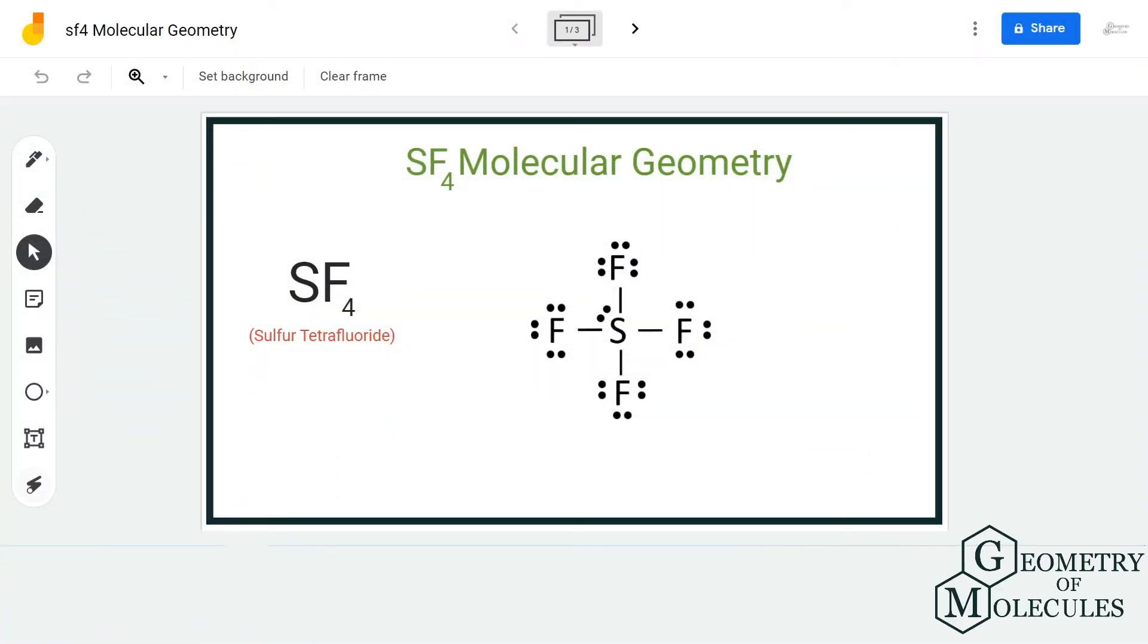Hi guys, welcome back to our channel. In today's video we're going to help you determine the molecular geometry of SF₄ molecule. SF₄ is the chemical formula for sulfur tetrafluoride. To determine its molecular geometry, we'll first look at its Lewis structure followed by its shape.